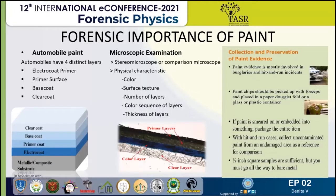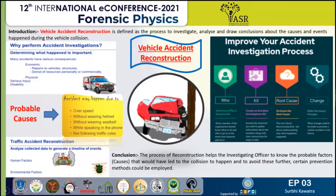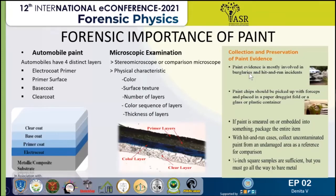Paint is most frequently encountered in hit-and-run and burglary cases — like paint from a car transferred to a vehicle, or paint from a house transferred to a tool during burglary. Forensic scientists can compare paint from a house to paint stuck on a burglary tool. They can also analyze paint from a hit-and-run to determine the color, make, and model of a car.